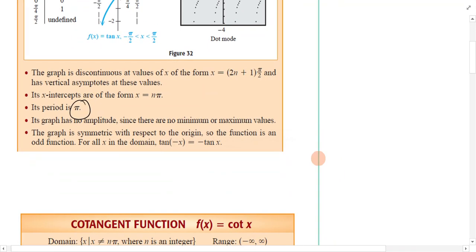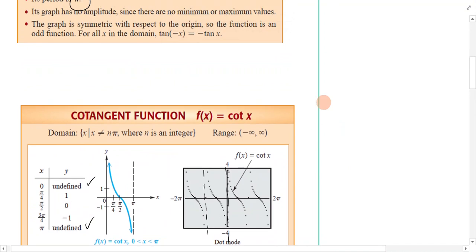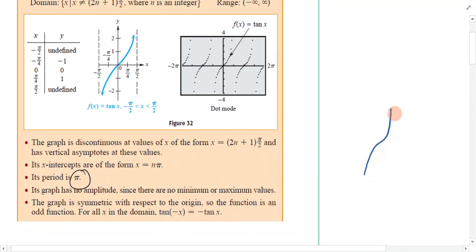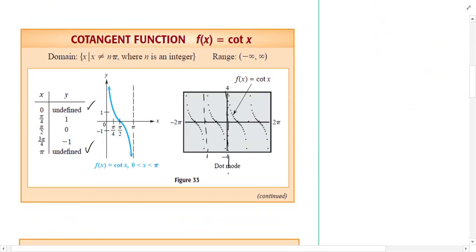So let's look at cotan. If tangent goes this way, cotan goes the opposite way. Same ideas though. The domain for cotan is x not equal to n pi, so it has different asymptotes, but it does still have boundaries every so often. The range is still negative infinity to infinity.